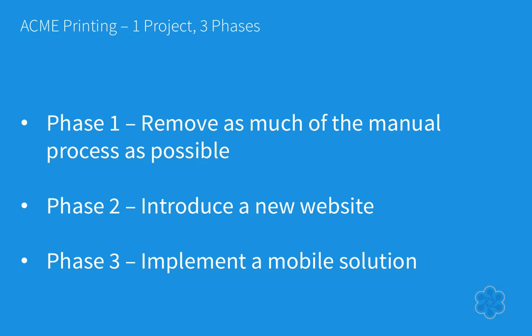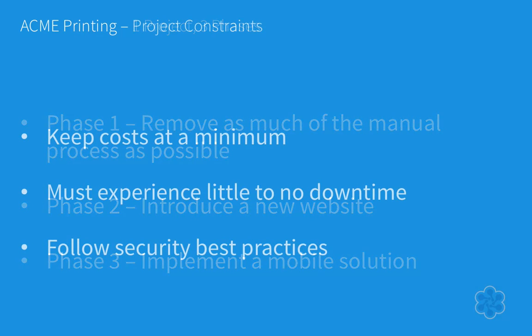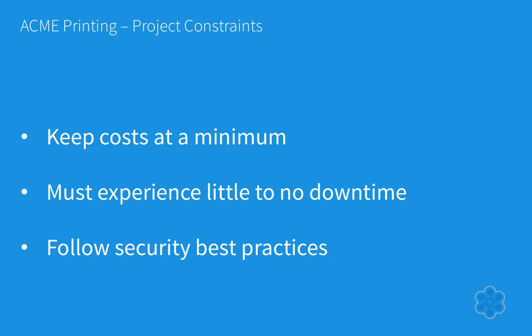They want to break up the new solution into three phases. In phase one, our goal is to remove as much of the manual process as we can without impacting the customers. Phase two requires that we implement a website for customers to manage their orders and accounts. The last phase is meant to expand the business by introducing a mobile application that can be used to take pictures of an object in order to build a 3D model. Throughout the project, the recurring costs must be kept at a minimum, the process must be available with little to no downtime, and security must follow best practices.